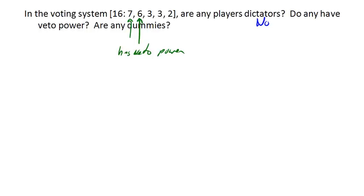So notice here, if these three players got together, that's player 1, player 2, and player 3, that together they add up to 16, and so they can reach quota. Likewise, player 1, player 2, and player 4 could reach quota. And so neither player 3 or player 4 has veto power.